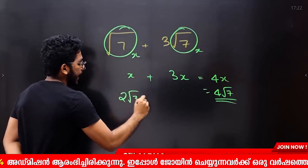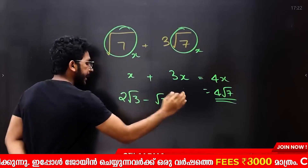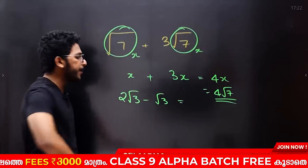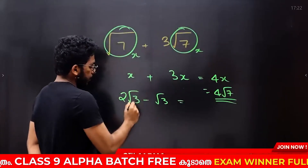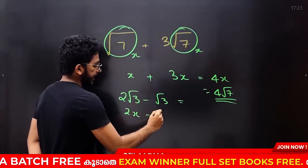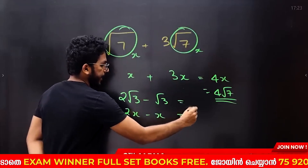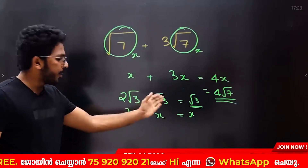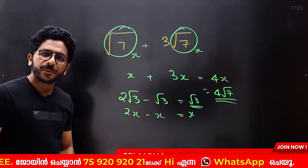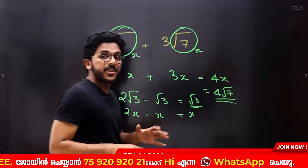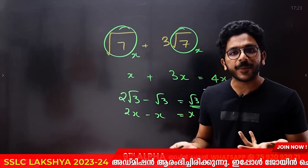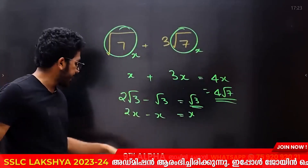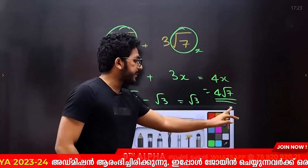Now for subtraction: 2 root 3 minus root 3. If you have two root 3 and you take away one root 3, you use 2 minus 1. That gives you one root 3, the same as 2x minus x equals x. So for addition and subtraction, you can combine like roots the same way.